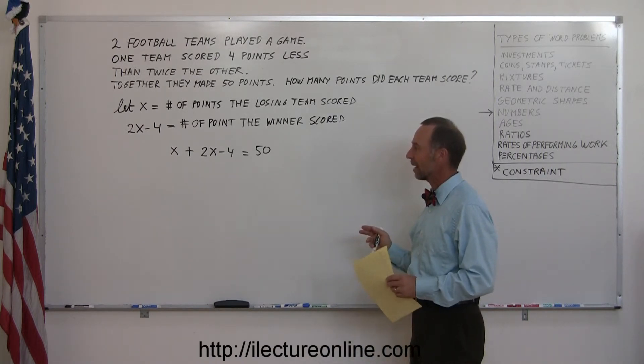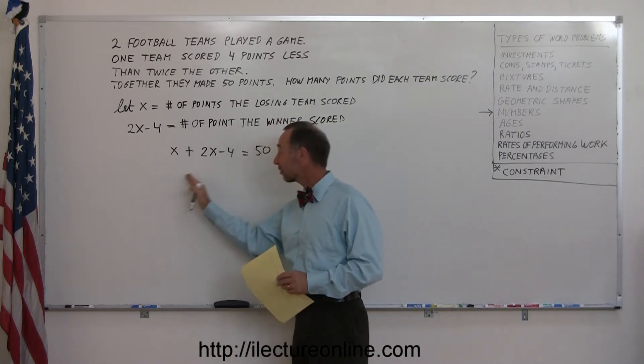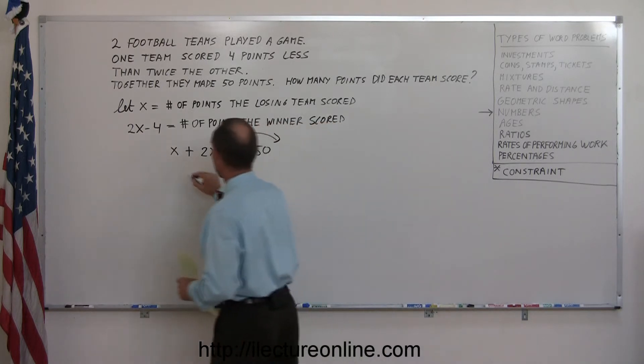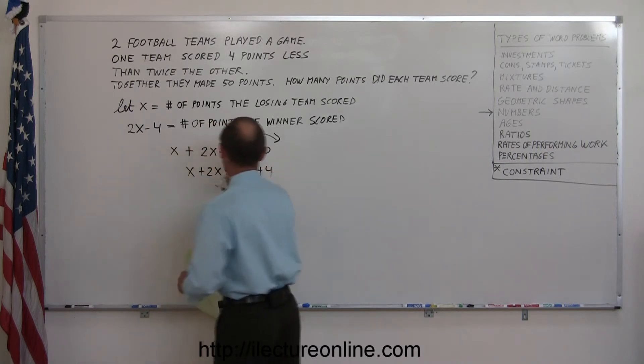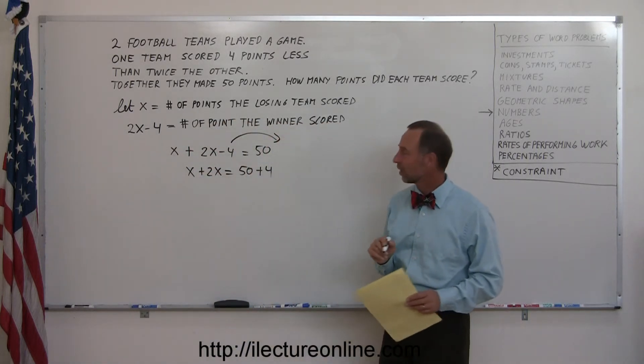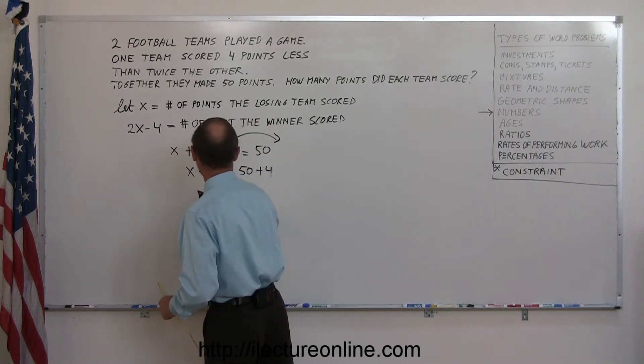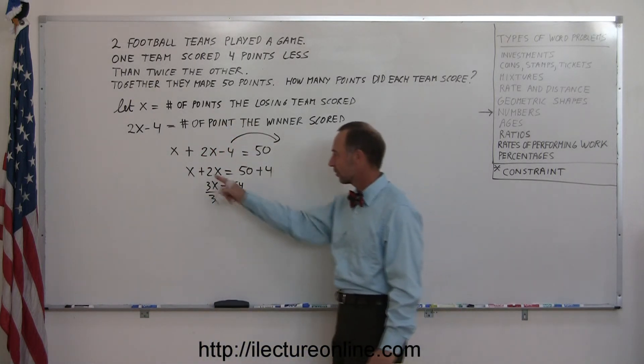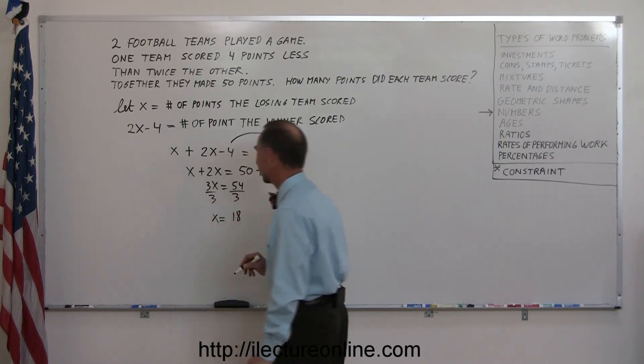Now we just simply have to solve this as a linear equation. We put all the x's on the left side—they're already there. Put the negative 4 on the other side, so we end up with x plus 2x equals 50 plus 4. Remember when we cross the equal sign, the sign changes. We combine like terms: x plus 2x is 3x, and 50 plus 4 is 54. Divide both sides by 3, the numerical coefficient in front of x. Of course that cancels out, we end up with x equals 18.